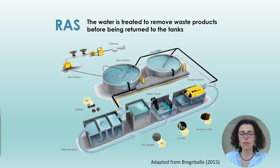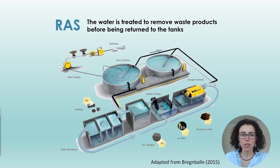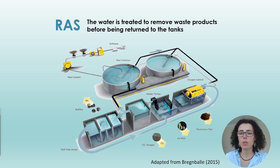So imagine here you have these two tanks — these bigger tanks — where your fish or whatever organism you're growing in the tanks, they have a food source, so they have here an automatic feeder potentially. And then of course they'll be excreting waste products, and for you to be able to reuse this water, you will need to treat the water and make it so that water has the optimal conditions for the growth of the fish, for instance.